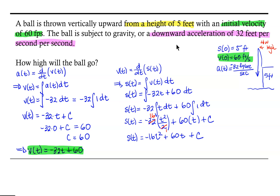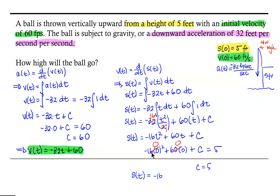We know the ball was thrown from a height of 5 feet, so the initial position is 5 feet. Using that in our position function: when t equals 0, we get negative 16 times 0 squared plus 60 times 0 plus C equals 5, which gives us 0 plus 0 plus C equals 5, so C equals 5. Our position function is therefore s(t) = negative 16t squared plus 60t plus 5.